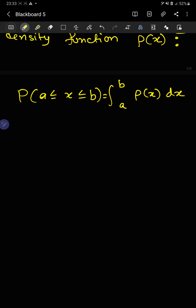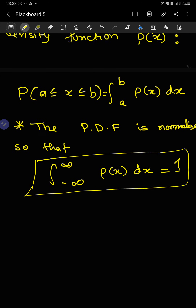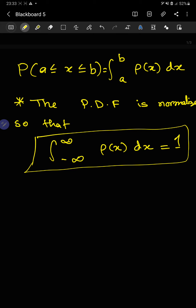Another important thing to note is that the probability density function is normalized so that the integral equals 1. This is a very important property. The limits are minus infinity to infinity because x takes all real values. If x only took values from 0 to infinity, then we would normalize with those limits in the integration.